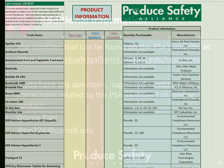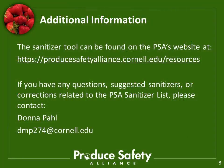That concludes the tutorial for the PSA Sanitizer list. As a reminder, the revised date can be found on the main page of the sanitizer list. This tool will be updated as necessary, at least annually. So if you have any questions, suggested sanitizers, or corrections related to the PSA Sanitizer list, please contact Donna Paul at dmp274@cornell.edu.